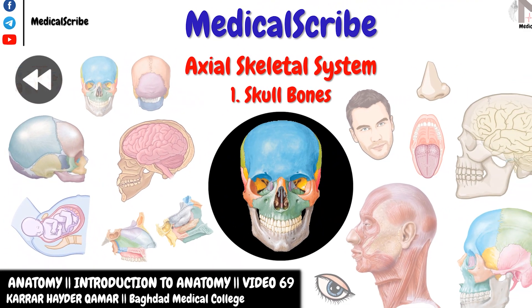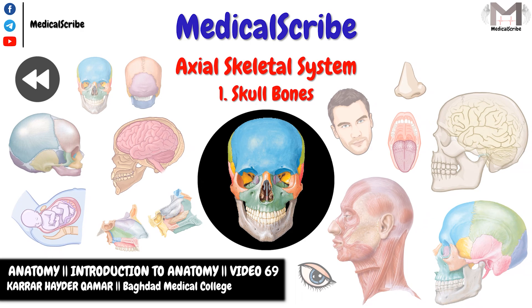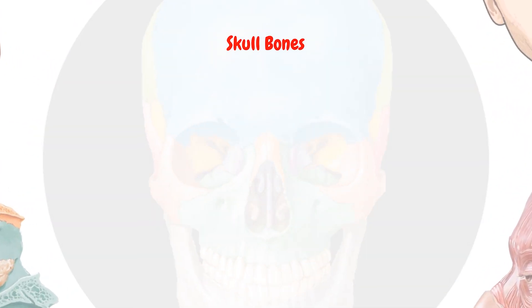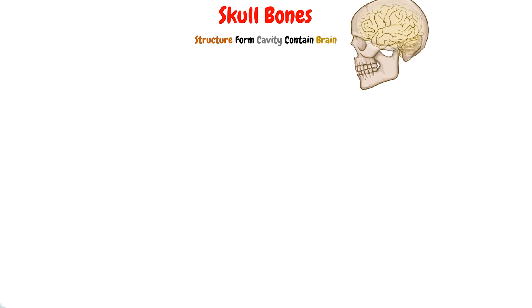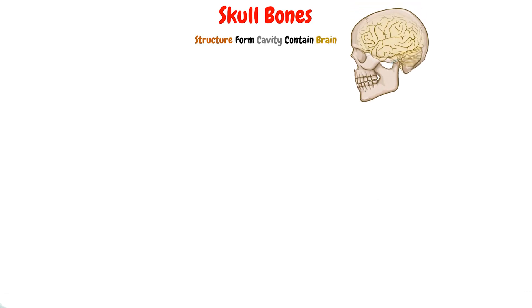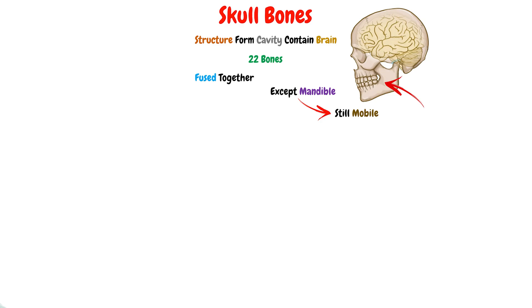So today, our topic will be about the skull bones, which is the first region in the axial skeleton. First of all, we should understand that the skull is the structure that forms a cavity which will contain the brain. This skull will be composed of 22 bones fused together, except the mandible, which will still be mobile. So we conclude that we have 21 bones fused together and one mobile bone, which is the mandible.